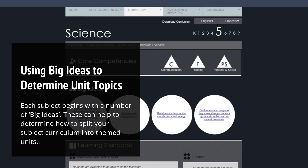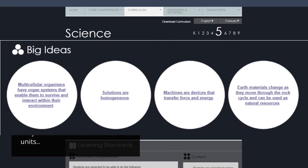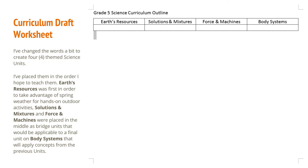Step one is using big ideas to determine topics for my units. All of the subjects and grade curricula have a bunch of big ideas in circles at the top of the page. Sometimes, but not always, especially with stuff like language arts, they correspond to broad topics of study. Here they are a little bit bigger — we've got some organ systems, solutions, which is a chemistry topic, machines, which touches on physics, and some stuff about natural resources, which is kind of a geology approach. So I can see that I have a pretty balanced curriculum with biology, chemistry, physics, and geology. What I did is I took those big ideas and changed the words and thought a bit about how I'd like to teach them.